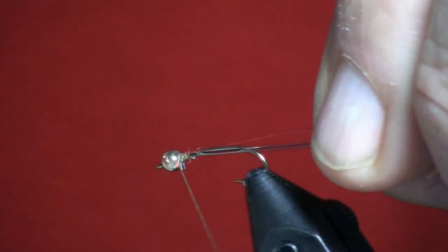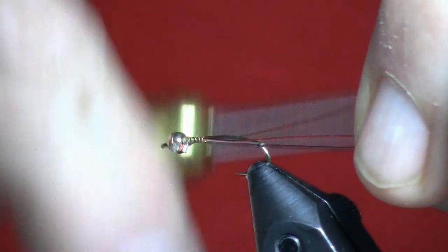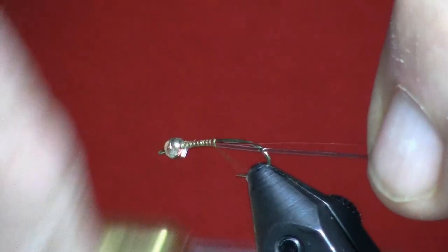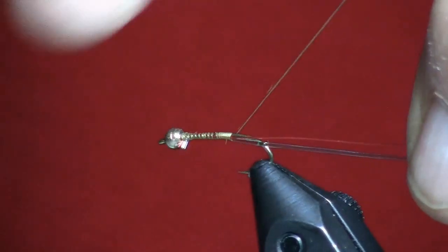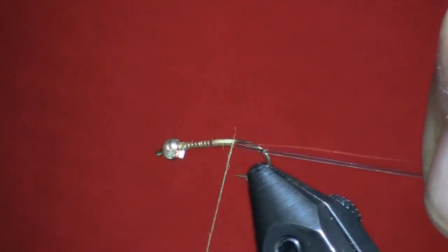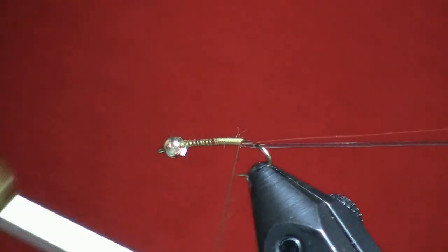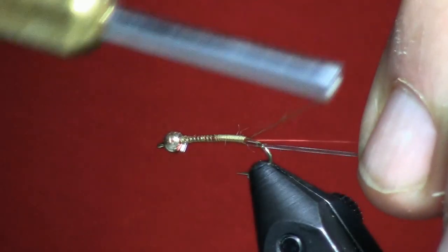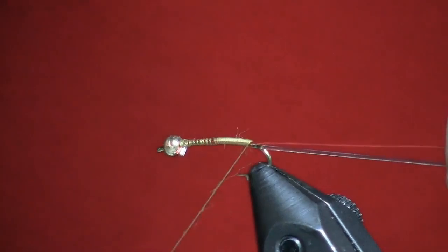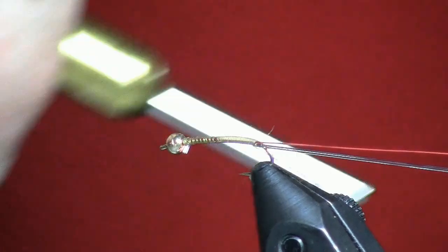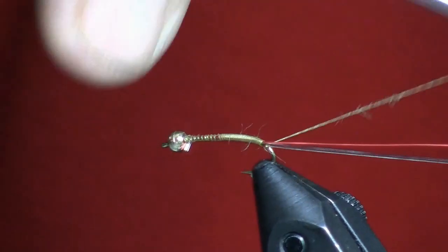I'm tying up some chironomids that my buddies in Washington State like to use on those prairie pothole lakes for those big triploid trout. Basically these are midge imitations that in a fertile lake will grow to some pretty substantial size imitations that you would not ordinarily think of for a midge, but given the right circumstances you'll get some pretty big bugs.